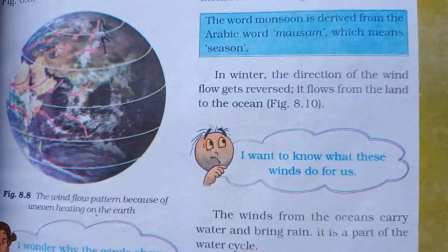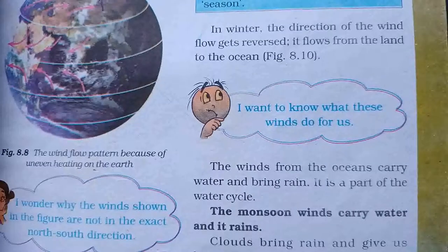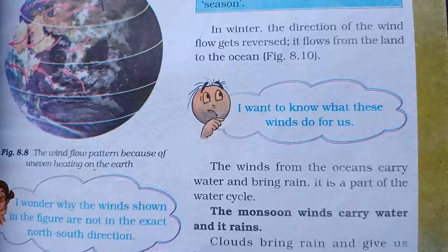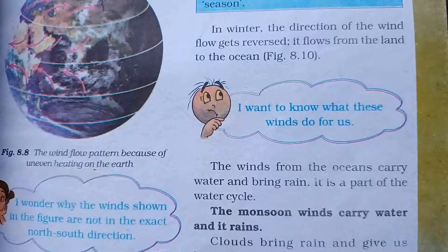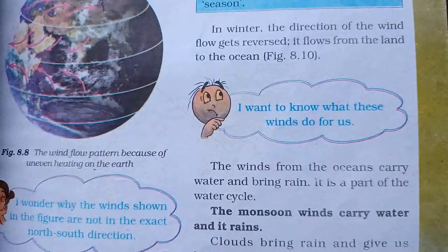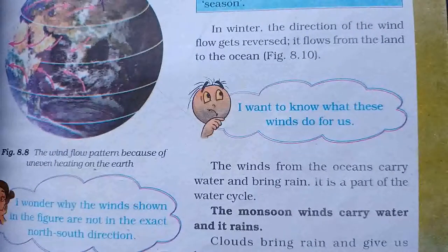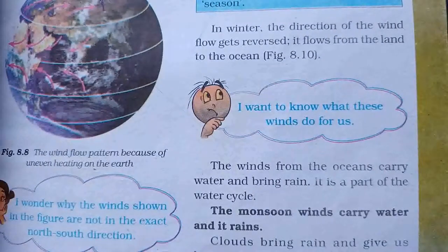It is a part of the water cycle. The ocean air has moisture — it carries water. Due to heat, this ocean air moves towards the land, and from the land it rises upward. This forms clouds. When the moisture in the clouds cools down, it rains. So the water comes back to the land. That entire cycle is called the water cycle.